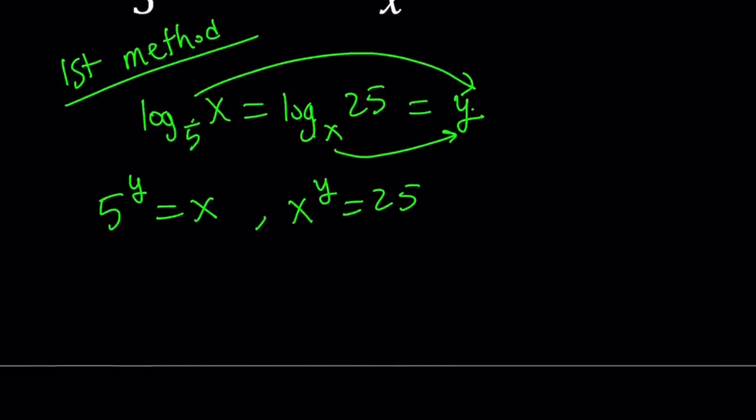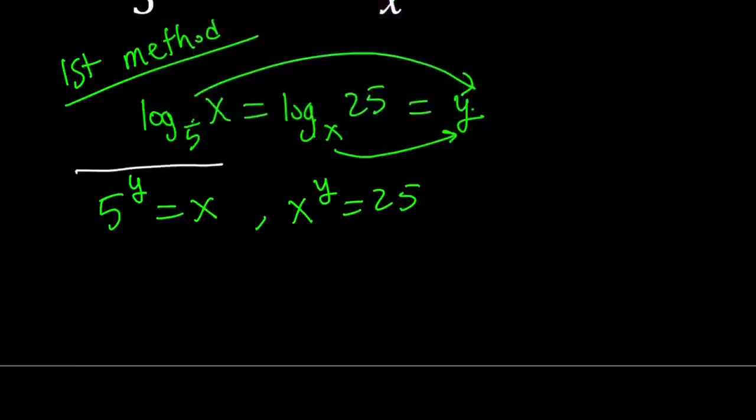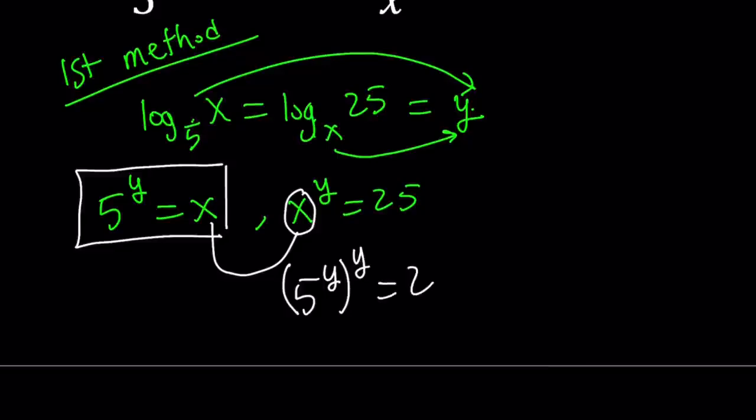So one thing we can do here is substitution. Let's go ahead and take this, 5 to the power y equals x, and substitute here because we have an x. We can replace x with 5 to the power y. And then that gives us 5 to the power y to the power y equals 25. And the rest is easy.